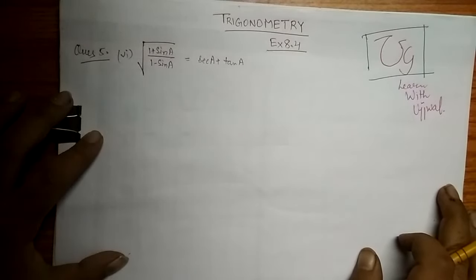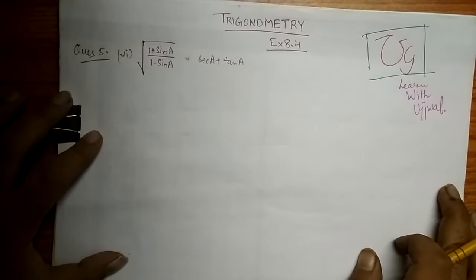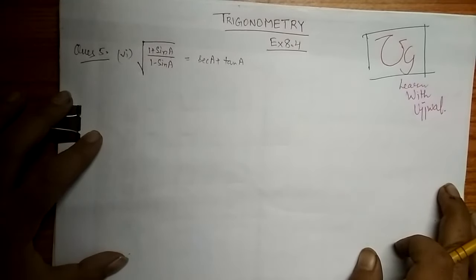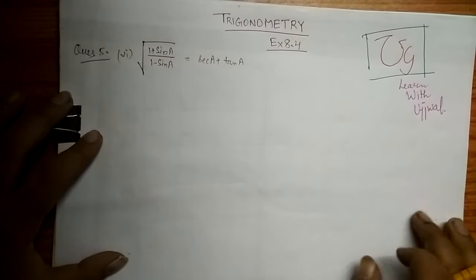Hello friends, let's start the solution of this question. In this question we are given that square root of (1 + sin a) upon (1 - sin a) is equal to sec a plus tan a. Now if we rationalize this question...